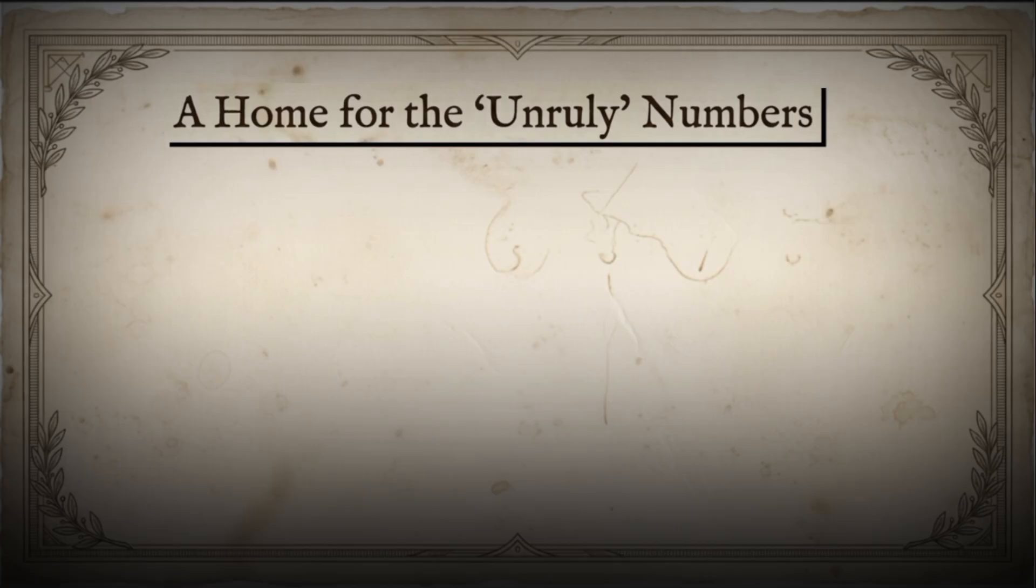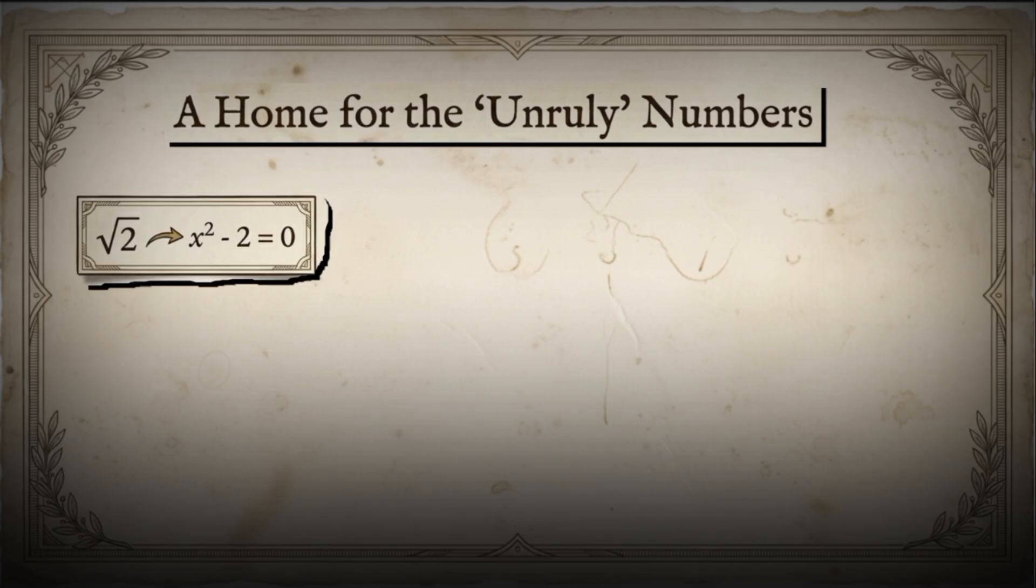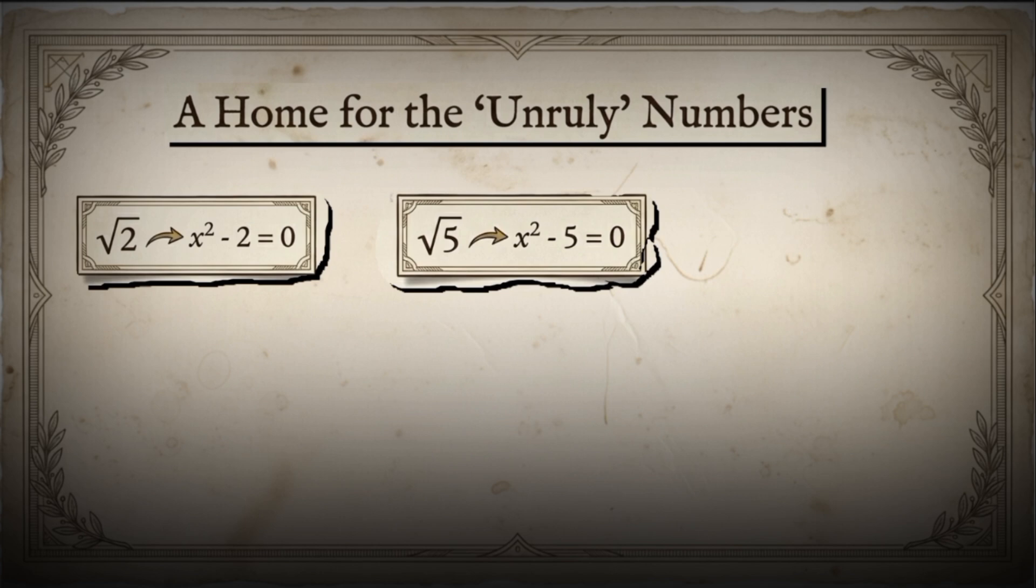Square root of 2 is the root of x squared minus 2 equals 0. Square root of 5 is the root of x squared minus 5 equals 0. Cube root of 7 is the root of x cubed minus 7 equals 0.